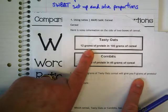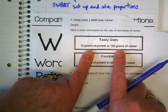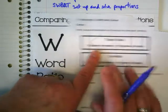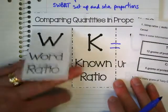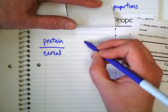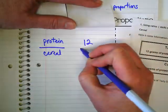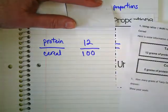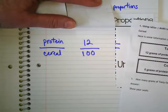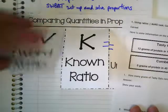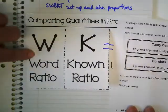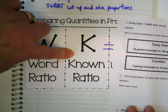Well, we know there's 12 grams of protein in what? Okay, so let's go back and look at this. We know there's 12 grams of protein in 100 grams of cereal. Do you see where I'm using the word here and what I know from the problem to help me set up that ratio?